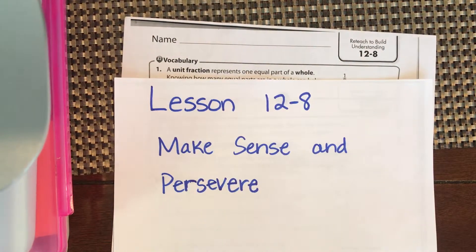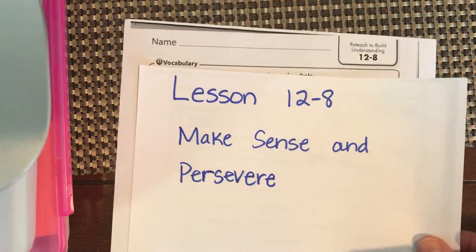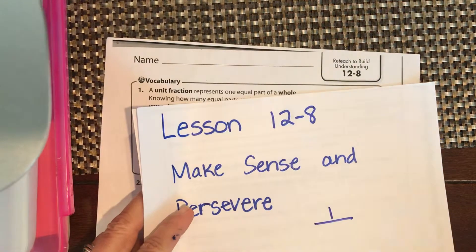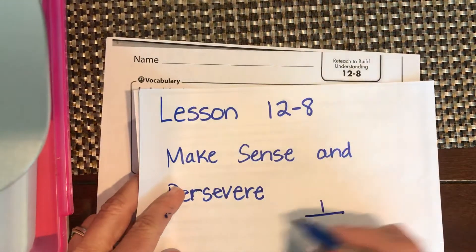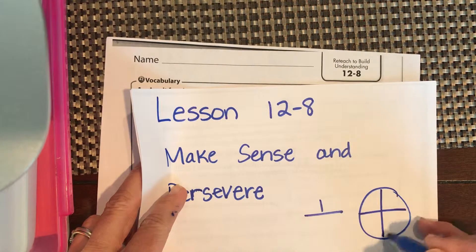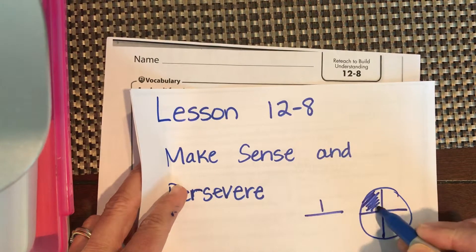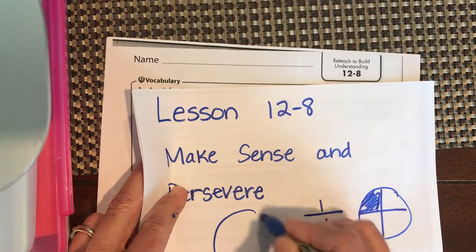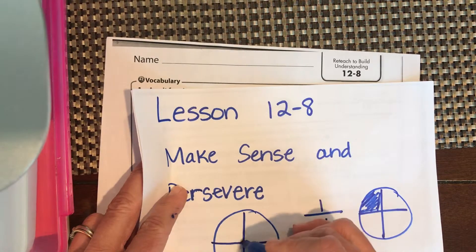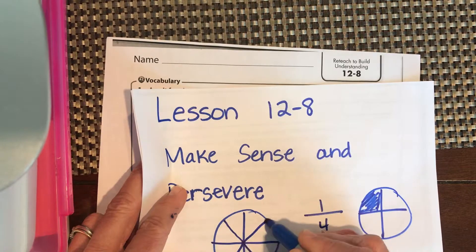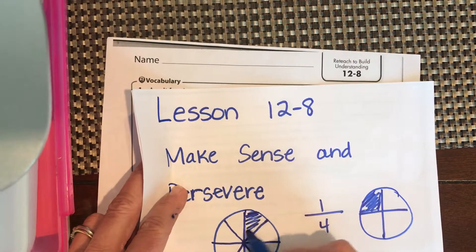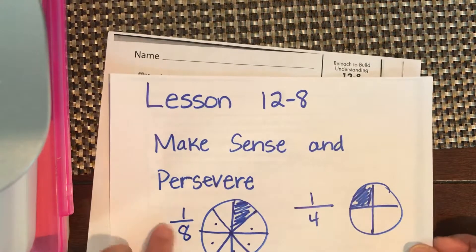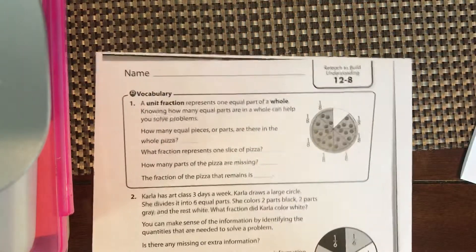We're going to do lesson 12-8: Make Sense and Persevere. A unit fraction is one part of a whole, so no matter what the denominator is, the numerator is always one. If we have a pizza cut into fourths, the unit fraction is one of those slices. If we then cut it into eighths — cut it into fours first and then cut each section in half — that doubles it and gives us eight. A unit fraction means one slice, so the numerator is always one and the denominator is eight.